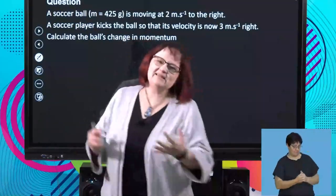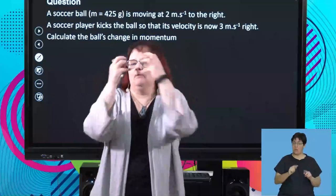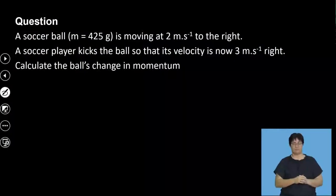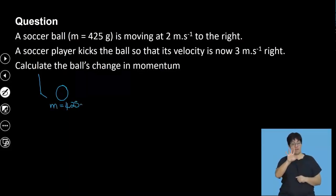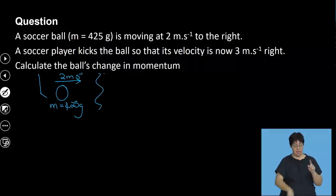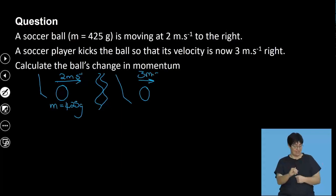This isn't a particularly difficult situation to understand, but we all think better when we can visualize it. So what we have is the foot of the soccer player. Here's my ball. The ball has a mass of 425 grams. It's initially moving at two meters per second. Then the soccer player kicks the ball. Now the soccer ball is still going to the right, and it's going at three meters per second.